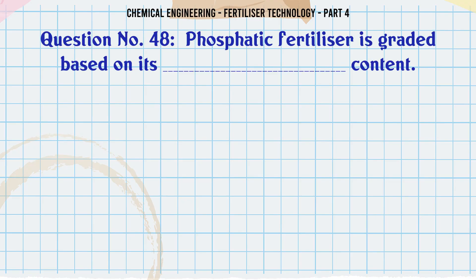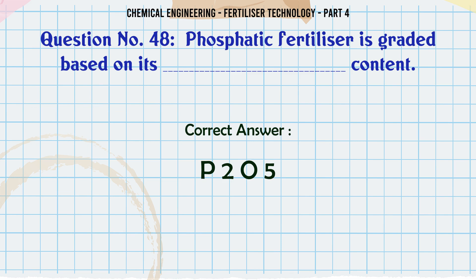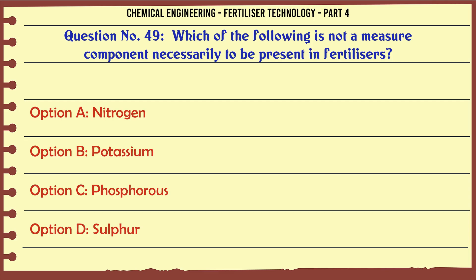Phosphatic fertilizer is graded based on its __ content: a. P2O3, b. PCl5, c. P2O5, d. H3PO4. The correct answer is: P2O5.